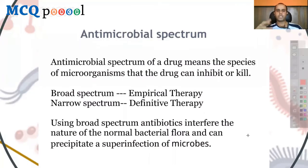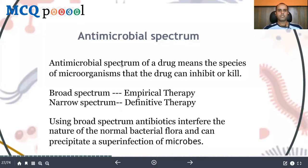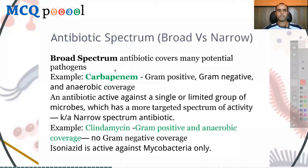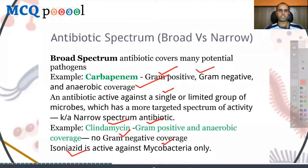Antimicrobial spectrum refers to the range of microorganism species a drug can inhibit or kill. Broad-spectrum antibiotics can interfere with the body's natural flora and cause superinfection. For example, carbapenem covers gram-positive, gram-negative, and anaerobic organisms. Narrow-spectrum agents are active against a single or limited group of microbes — clindamycin is effective against gram-positive and anaerobic bacteria only, while isoniazid is active against mycobacteria only.